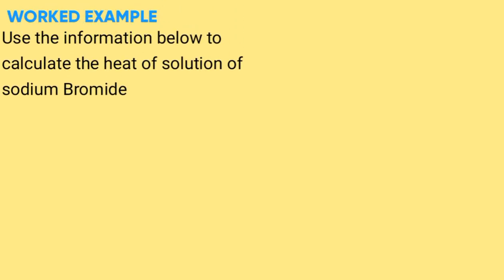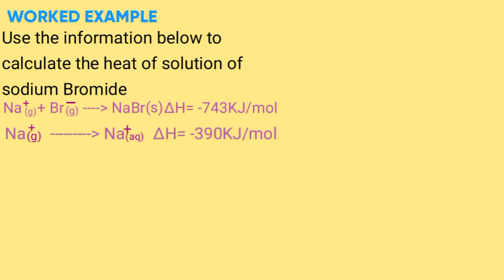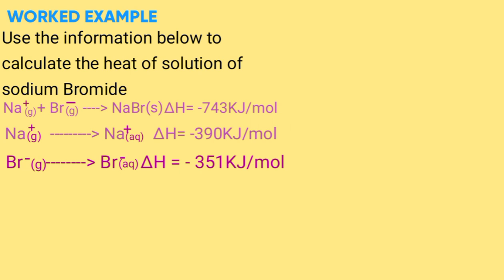Worked example: Use the information below to calculate the heat of solution of sodium bromide. Na⁺ (gas) + Br⁻ (gas) → NaBr (solid): ΔH = negative 743 kilojoules per mole. Na⁺ (gas) → Na⁺ (aqueous): negative 390 kilojoules per mole. Br⁻ (gas) → Br⁻ (aqueous): negative 351 kilojoules per mole. The energy cycle will be as follows.